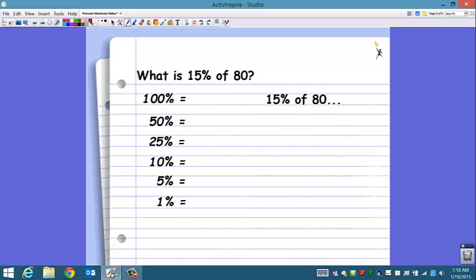So, what is 15% of 80? Let's go ahead and take a look at our benchmarks. 100% is, of course, 80. 50%, well, that's half of 80, which is 40. 25%. You could look at this two different ways. You could say, oh, 25% is half of 50, so half of 40 is 20.